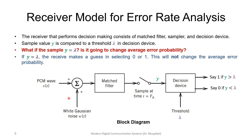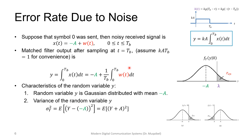We have a PCM wave corrupted with noise at the transmitter side. At the receiver we'll have the noisy version of the signal, and we will use a matched filter, sampler, and a decision device compared to a threshold because we have binary — either greater than or less. Now let's do the error rate analysis due to noise. Suppose that 0 is sent — we are sending 0. The noisy received signal will be minus A because we are sending 0, and the noise is represented by W(T). This is the signal that we receive: minus A corresponding to 0, and noise.